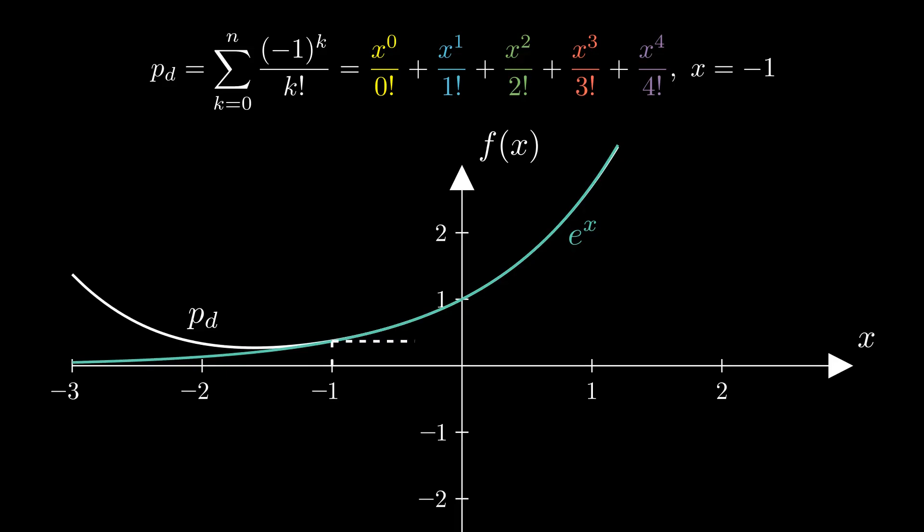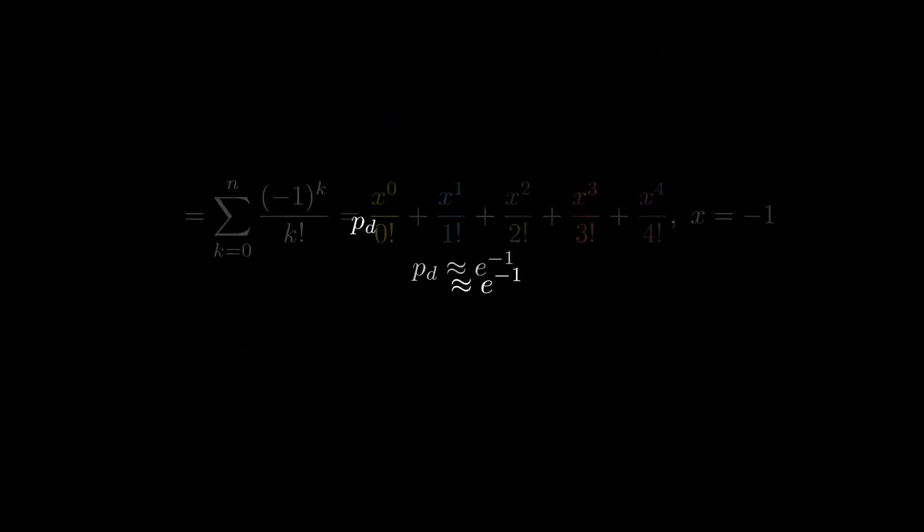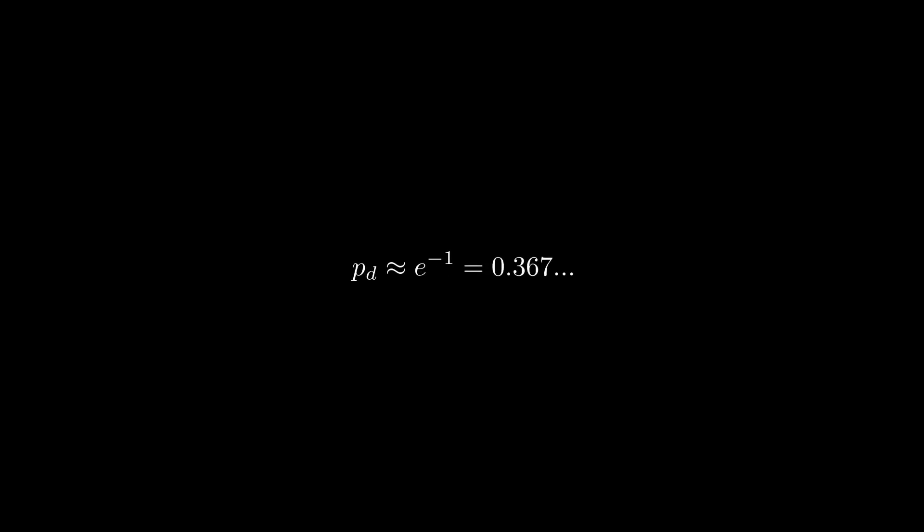Now, after we remembered that x was supposed to be -1, everything falls into place. The sum we wrote above is a pretty good approximation of e^(-1).